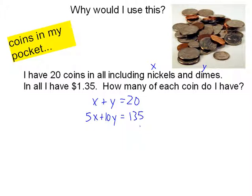If I wanted to solve this equation I could do it several ways. To graph it I'd need to get both into slope-intercept form. For substitution I'd need to solve one of the equations for X or Y — which is very doable — but I want to focus on the elimination method.